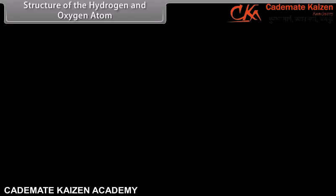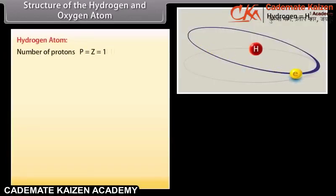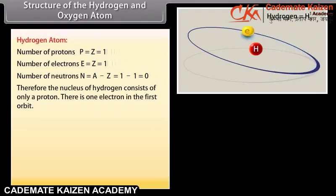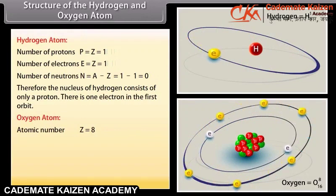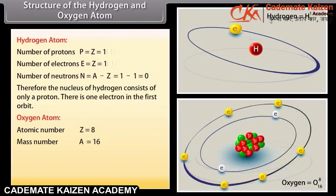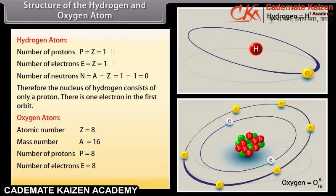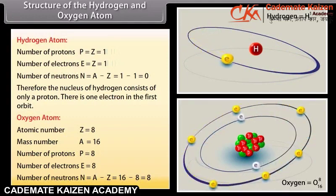Structure of the hydrogen and oxygen atom. Hydrogen atom: number of protons P = Z = 1; number of electrons E = Z = 1; number of neutrons N = A − Z = 1 − 1 = 0. Therefore, the nucleus of hydrogen consists of only a proton, and there is one electron in the first orbit. Oxygen atom: atomic number Z = 8; mass number A = 16; number of protons P = 8; number of electrons E = 8; number of neutrons N = A − Z = 16 − 8 = 8.